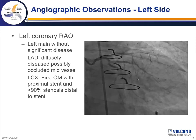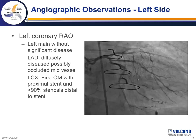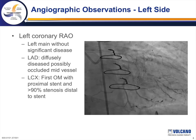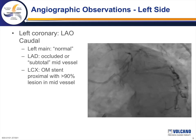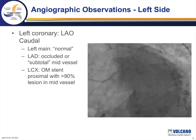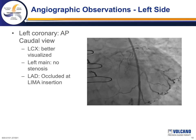She underwent angiography. Images of her left coronary system showed the left main to have no significant disease. The LAD appeared to be diffusely diseased on the RAO view, and the circumflex showed a stent in the first obtuse marginal branch with greater than 90% stenosis distal to the stent. In the LAO view, the diffusely diseased LAD was still evident, the left main had very mild disease, and the obtuse marginal branch stenosis appeared more significant. In the AP caudal view, the obtuse marginal branch stenosis was better visualized.